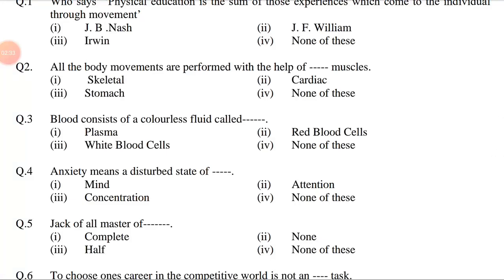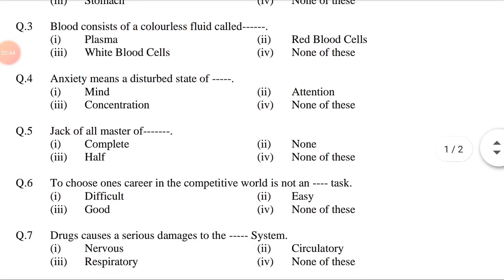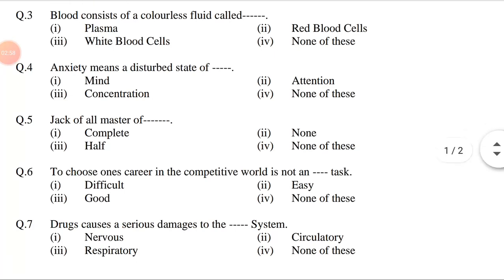Question 4: T means A — disturbed state of dash. Option 1: Mind. Option 2: Attention. Option 3: Concentration. Option 4: None of these. Question 5: Jack of all, master of dash. Option 1: Complete. Option 2: None. Option 3: Half. Option 4: None of these.